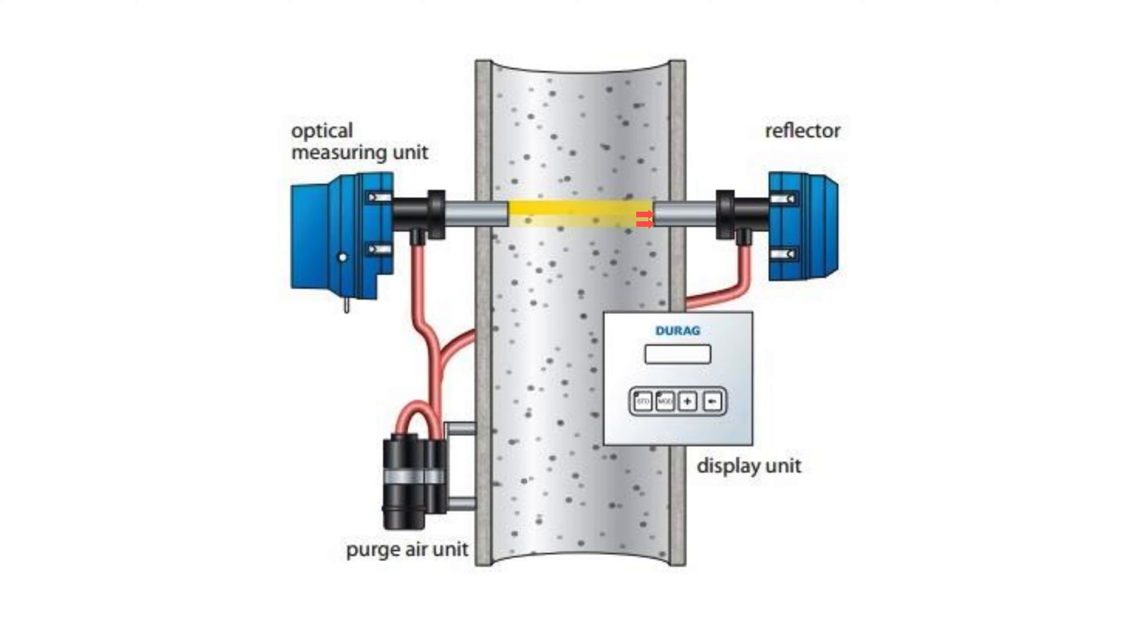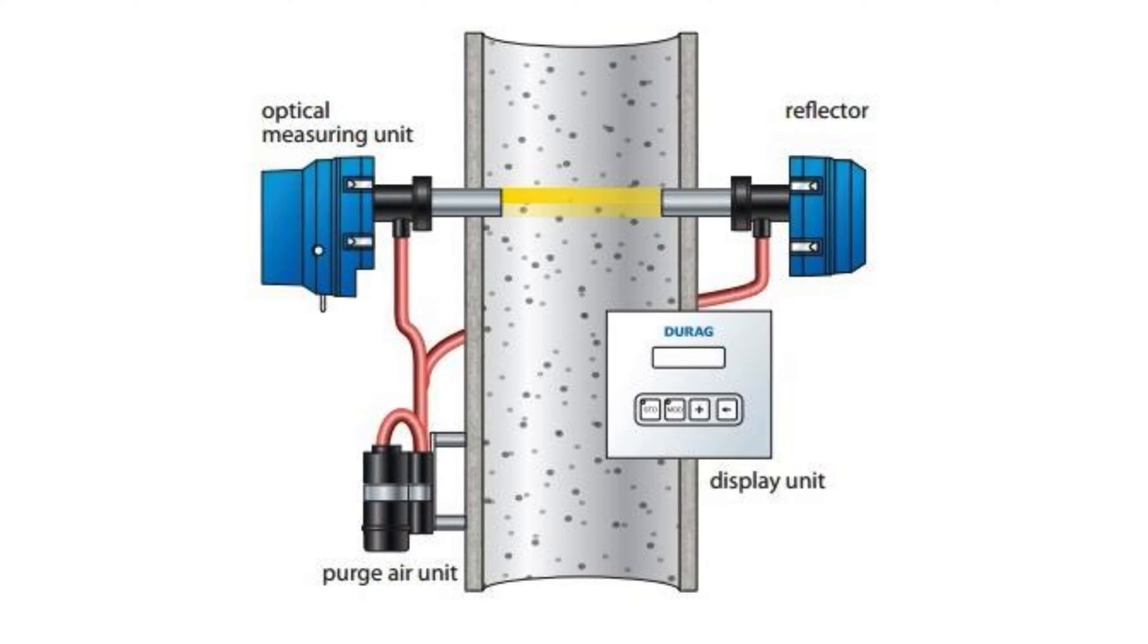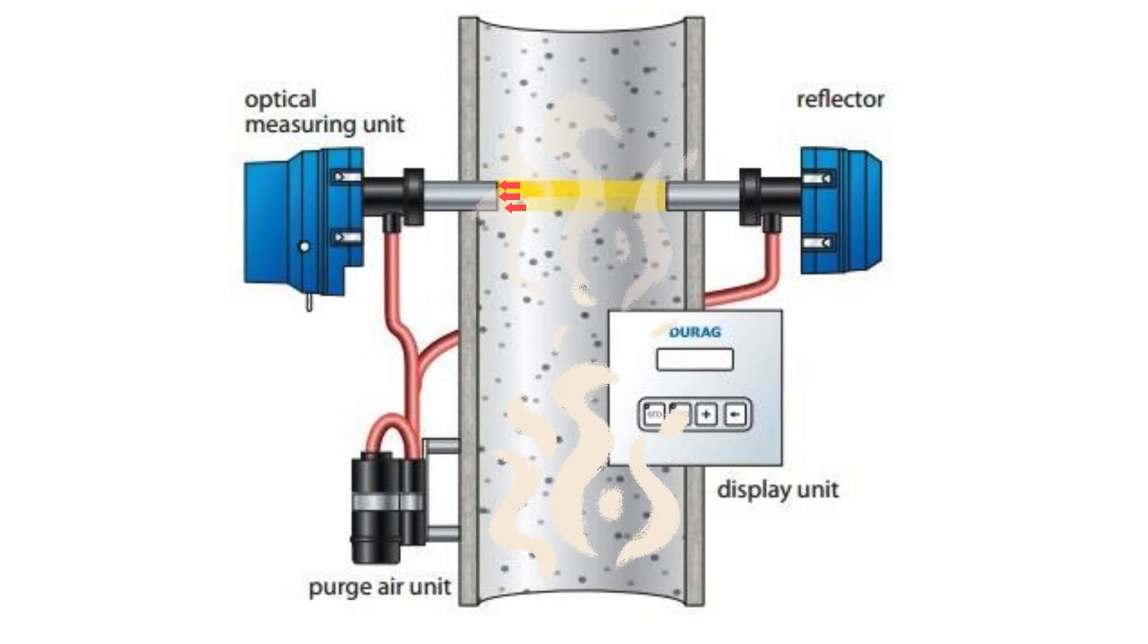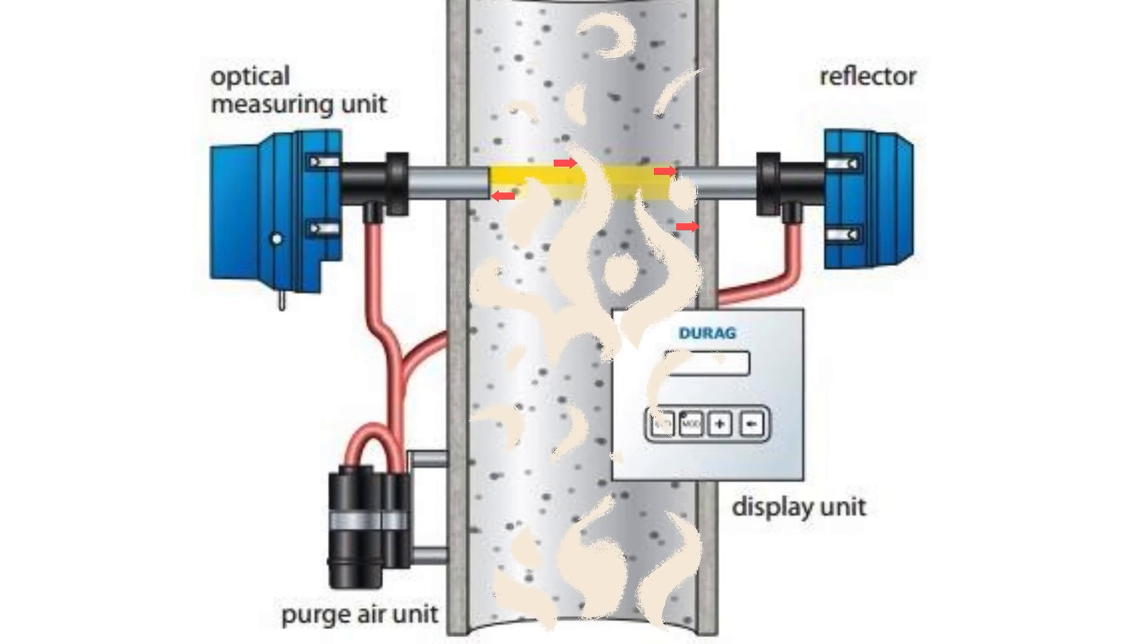Dust and opacity monitors operate on the basis of the transmission principle. The measuring head sender and the reflector receiver are fitted opposite to each other. The transceiver emits a beam of light which passes through the stack or duct and strikes a reflector. The light beam is reflected back and the amount of light returned is measured by the transceiver.